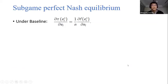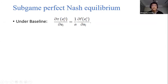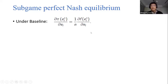Now let me discuss the Nash equilibrium calculation. The underlying principle is simple: we equate marginal benefits to the marginal expected fine. Under the baseline, the left-hand side is the marginal benefit, and on the right-hand side, with probability 1/n, player i is randomly caught by police and must pay a fine. We solve for the equilibrium crime level eᵢ* for everyone.